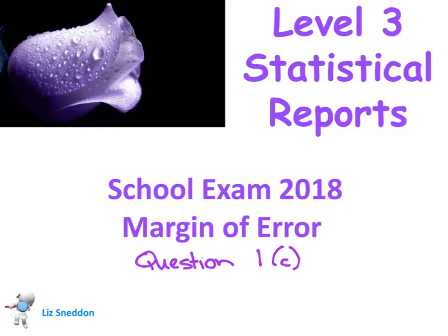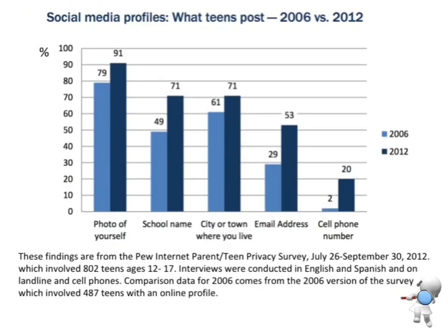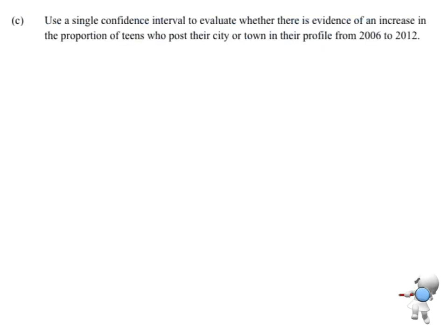Let's have a look at question 1c. We've got our survey and media reports and details. Use a single confidence interval to evaluate whether there is evidence of an increase in the proportion of teens who post their city or town from 2006 to 2012.